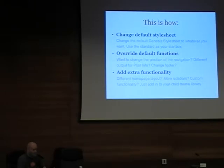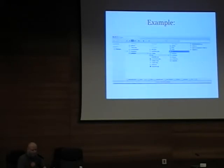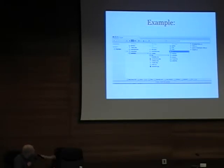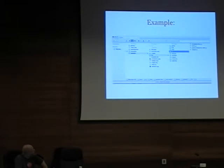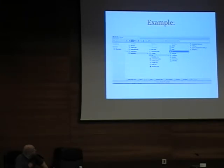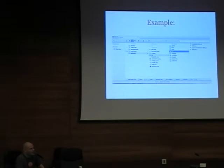If you'd like extra functionality — like the orange search button — you would do that just the way you would with your normal theme. You create a library, and within that library that's where you logically house your code. You structure it as much as possible, because that's what keeps you sane. The WP Realm theme has stuff specifically for admin, custom fonts, HTML, JavaScript, markup, meta boxes, and specific plugins only used for that site. This creates a good solid code base and folder structure.